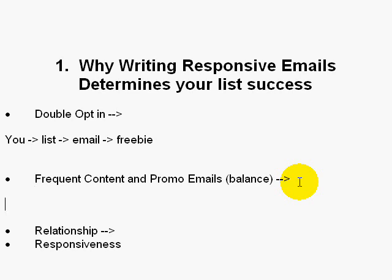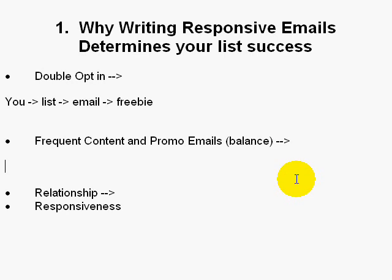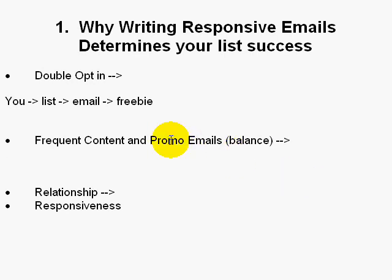Once you've chosen double opt-in or single opt-in — I recommend double opt-in — you need to email them with frequent content and promotional emails. So you've got a balance: content, then promotional emails. You educate them, then you promote. You don't want to do just content, content, content — otherwise your list will think you only give free stuff. What I've learned is if you give somebody free things every single week for six months and then all of a sudden you promote something, most of the time those people won't even buy from you.